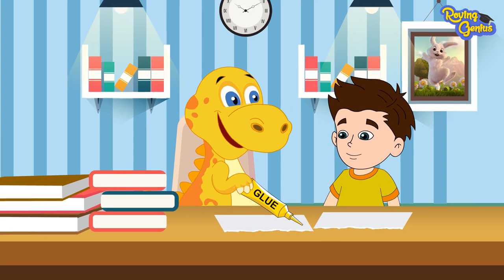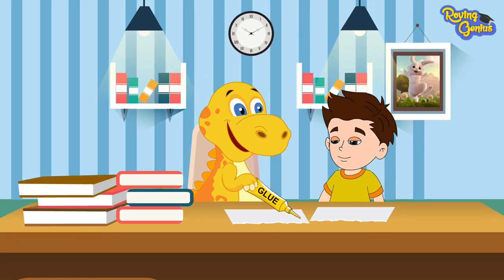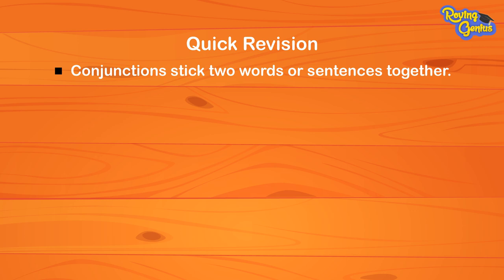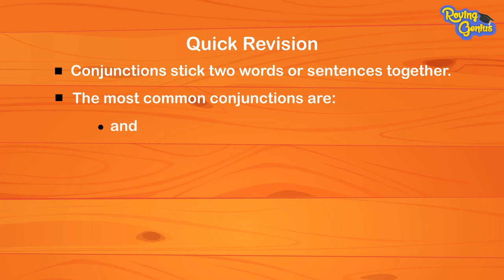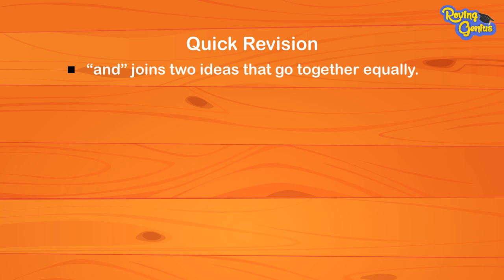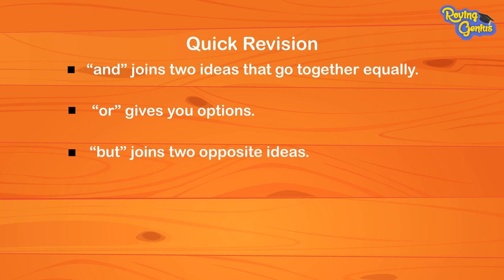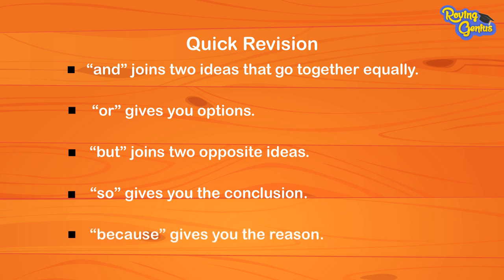Omar, now you tell me what you know about conjunctions. Conjunctions stick two words or sentences together. The most common conjunctions are and, or, but, so, because. AND joins two ideas that go together equally. OR gives you options. BUT joins two opposite ideas. SO gives you the conclusion. BECAUSE gives you the reason.